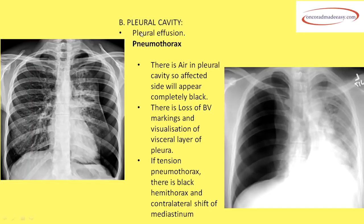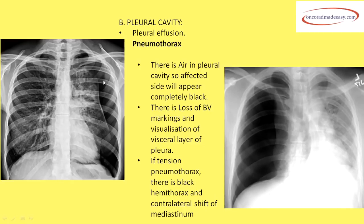Next in the pleural cavity is pneumothorax. Air is completely black on X-ray, so if the pleural cavity is black and there are no bronchovascular markings, this indicates pneumothorax. When pneumothorax is present, the visceral pleural layer is pushed inwards and becomes visible. The two signs of pneumothorax are: absence of bronchovascular markings in a black pleural area, and a visible visceral pleural layer.